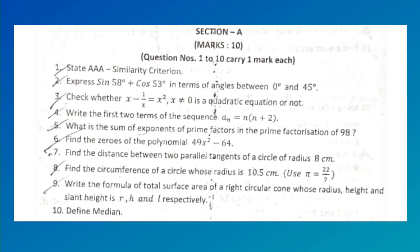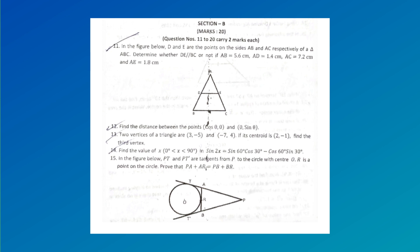Find the zeros of the polynomial 49x² - 64. Find the distance between two parallel tangents of a circle of radius 8 cm. Find the circumference of a circle whose radius is 10.5 cm (use π = 22/7). Write the formula of total surface area of a right circular cone whose radius, height, and slant height are r, h, and l respectively. Define median.